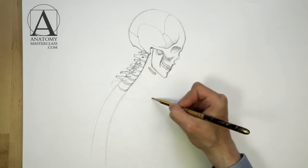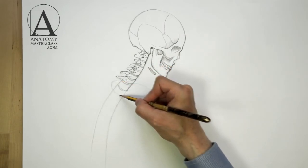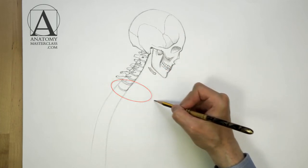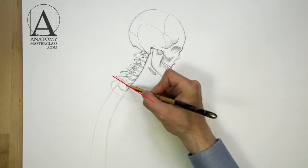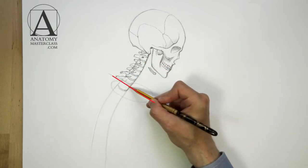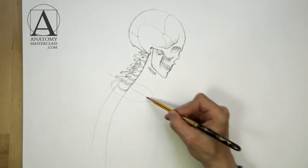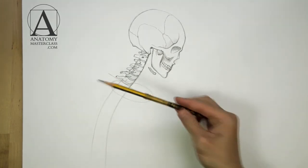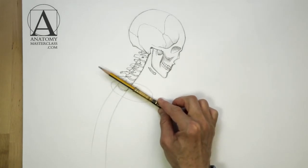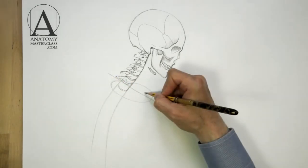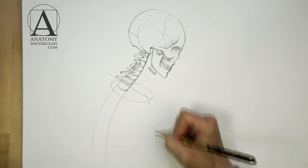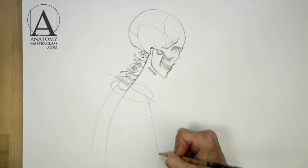This is the first pair of ribs. It has a circular outline and appears, in perspective, as an oval. The axis of this oval is slightly tilted downwards. At the front, this pair of ribs is connected to the top part of the breastbone.